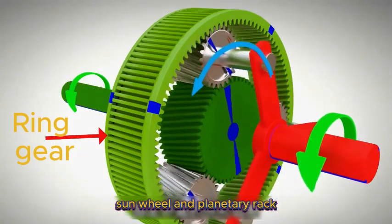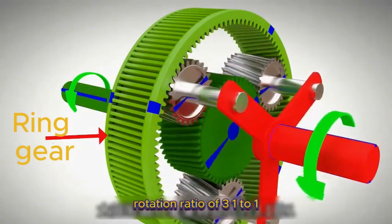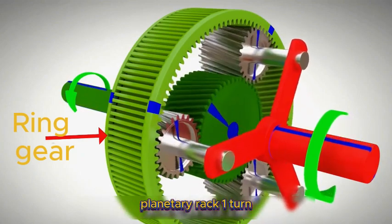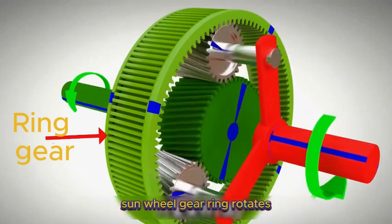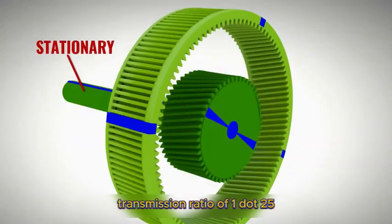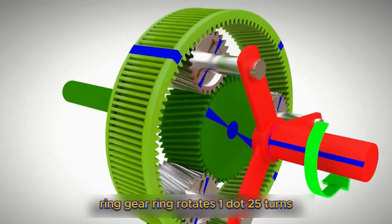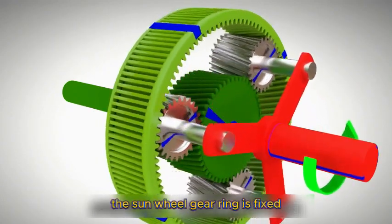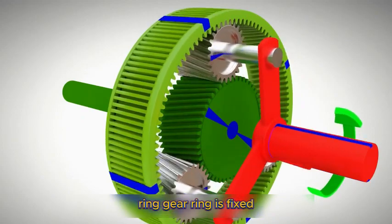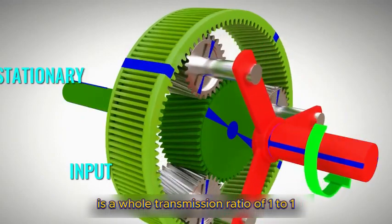Fixed outside ring gear: rotation ratio of sunwheel to planetary rack is 3.1 to 1. Sunwheel rotates 3.1 turns, planetary rack 1 turn. Fixed middle sunwheel gear: ring rotates with transmission ratio of 1.25. Ring gear rotates 1.25 turns, planetary rack rotates 1 turn. With sunwheel and gear ring fixed, the planetary gear rack with them is a whole, transmission ratio of 1 to 1.